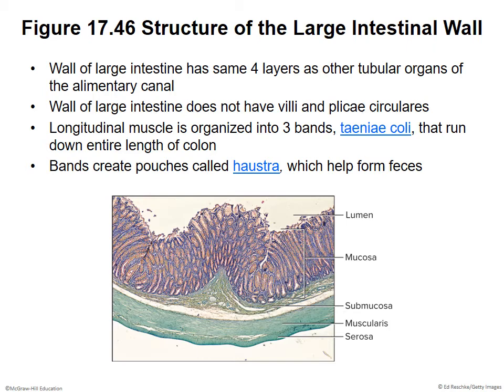The large intestine has the same four layers as the rest of the alimentary canal, but it does not have villi or plicae circulares. Those structures were designed to increase surface area in the small intestine, where the majority of absorption happens. The villi and plicae circulares helped mix contents with enzymes to break things down. In the large intestine, the main concern is water, so only simple channels are needed to allow water to escape.